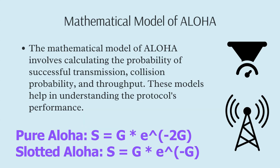The mathematical model of Aloha involves calculating the probability of successful transmission, collision probability, and throughput. These models help in understanding the protocol's performance and identifying areas for improvement. For example, the throughput of Pure Aloha can be calculated using the formula S = G × e^(−2G), where S is the throughput and G is the average number of transmission attempts. Similarly, the throughput for Slotted Aloha is given by S = G × e^(−G). These equations provide valuable insights into the efficiency of the protocol under different conditions.